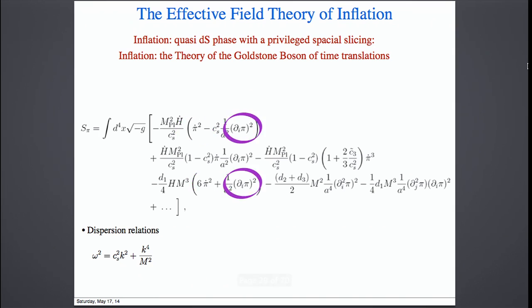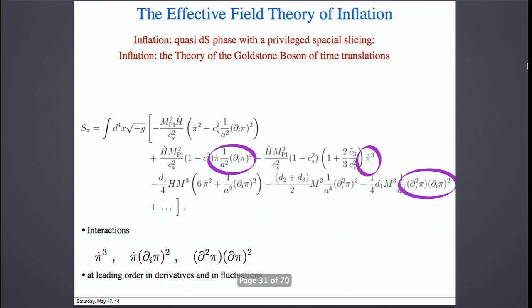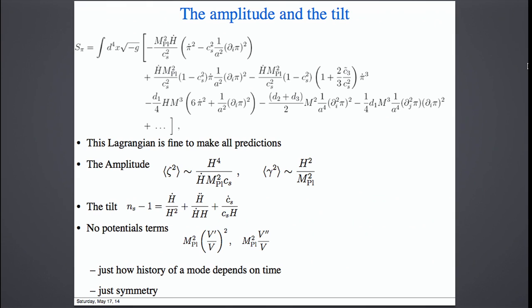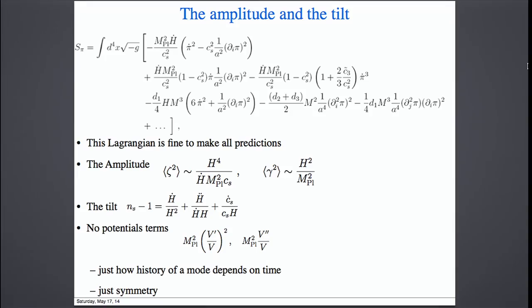You can think of pi as the scalar field — the inflaton fluctuation — but here I'm not assuming there is an inflaton as a fundamental scalar field. There are kinetic terms, spatial kinetic terms, higher derivative terms so that the dispersion relation looks like a specific form, and interaction terms. This Lagrangian doesn't contain any V or V-prime. There is only H, S-dot, and Cs, which are all properties of the fluctuations. They don't fill V(phi) — it's absent from this Lagrangian.